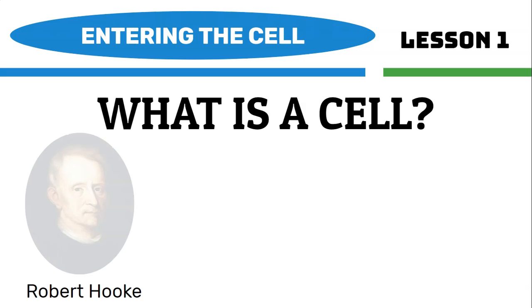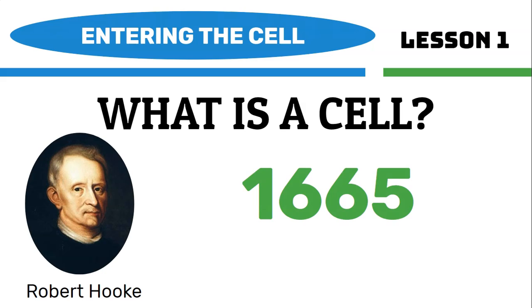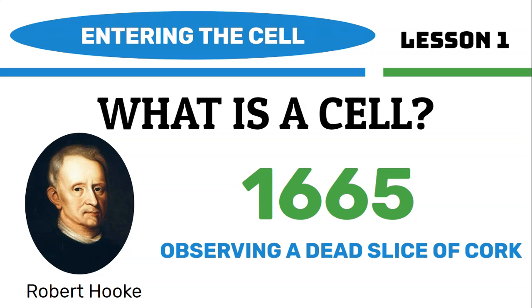Cells were first discovered by Robert Hooke in the year 1665. He was observing a dead slice of cork through a self-made primitive microscope and he noticed some rectangular shapes. They looked like little rooms or compartments, and they were aligned in rows and columns.